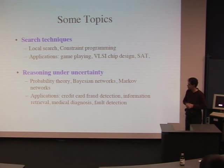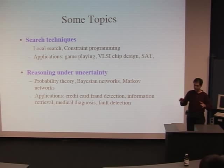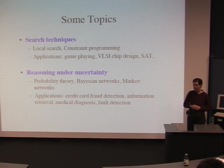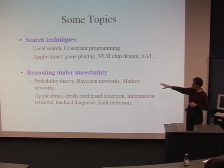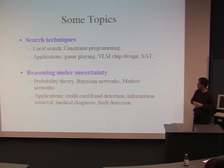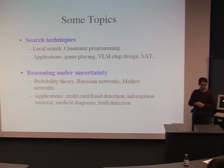Beyond search, we're also going to look at reasoning under uncertainty. In a lot of problems, things are not exact or black and white — there's a gray area, and it's difficult to get computers to deal with missing or noisy information. We'll look at different models from probability theory, including Bayesian networks and Markov networks. Some applications include credit card fraud detection, information retrieval, medical diagnosis, and fault detection.